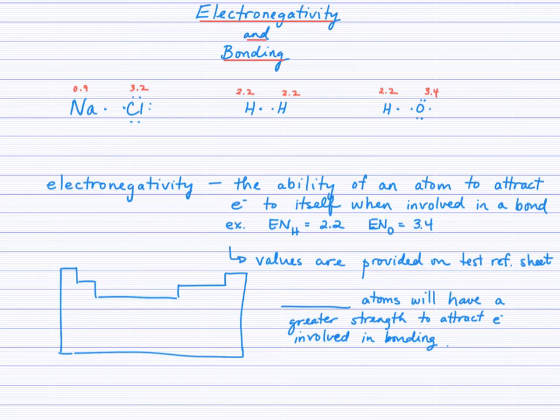Electronegativity and bonding. In this lesson we're going to consider how two atoms share or transfer electrons when near each other. Here in the first diagram I have sodium — you'll recognize the one valence electron — and chlorine, with seven valence electrons from group 17. These are the Lewis symbols of both sodium and chlorine atoms.